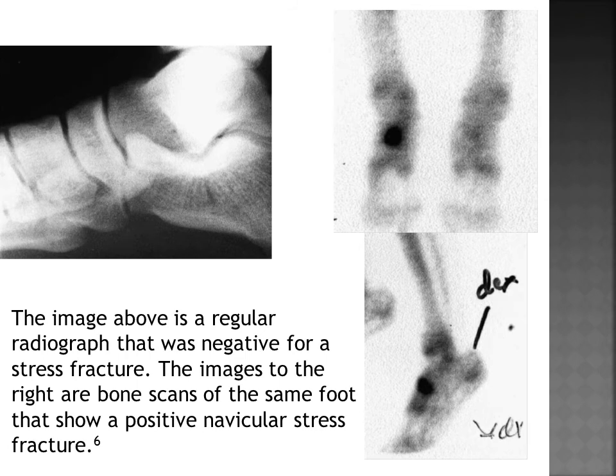This slide shows a navicular stress fracture in a side-by-side comparison of radiograph versus bone scan. On the left is the radiograph, on the right is the bone scan, and you can see the bone scan detected the stress fracture as highlighted by hot spots, while the radiograph did not.